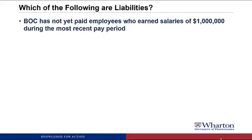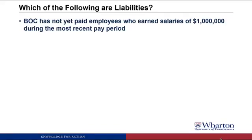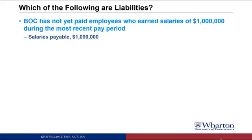BOC has not yet paid employees who earned salaries of $1 million during the most recent pay period. This would be a liability, which we're going to call salaries payable. It meets the first criteria because the employees have worked for us — we've gotten the benefit of their services and now have an obligation to pay them. The amount we owe is reasonably certain at $1 million, so we'd book a liability called salaries payable for $1 million.